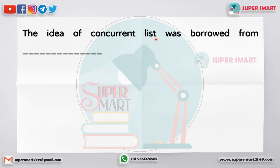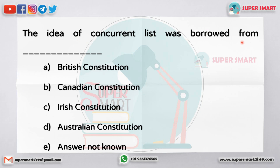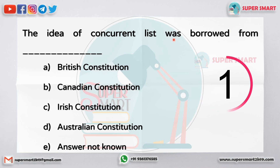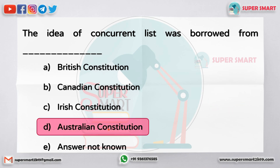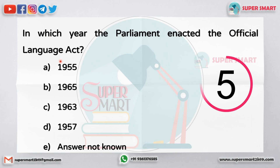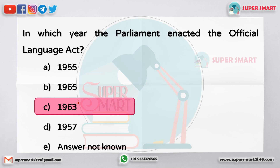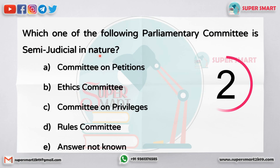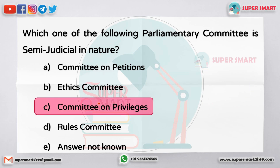The idea of concurrent list was borrowed from dash. One question is 5 seconds — guess your answer. The answer is the Australian Constitution. In which year did Parliament enact the Official Language Act? The answer is 1963. Which one of the following Parliamentary Committee is semi-judicial in nature? The answer is the Committee on Privileges.